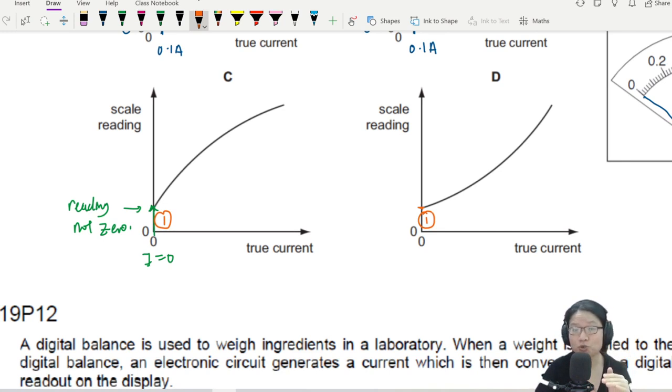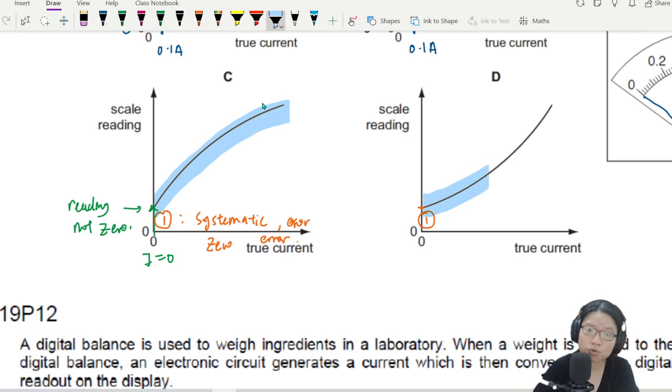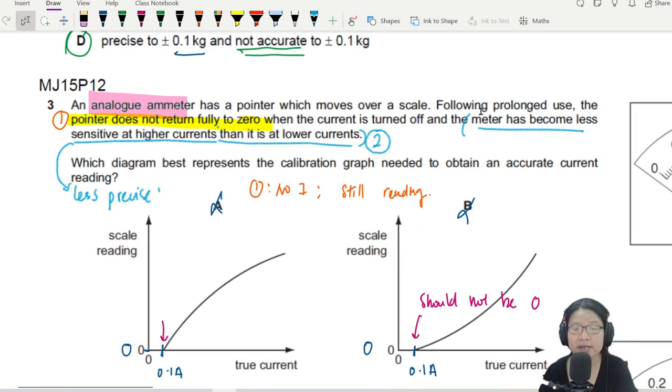The best one is actually to have the graph passing through the origin. So this one is actually a systematic, which is also a zero error. Systematic error, also known as zero error. Now, the next thing to look at is the graph. So if I check the curvature of the graph, this one is decreasing gradient. This one is increasing gradient. This is to represent the second problem.